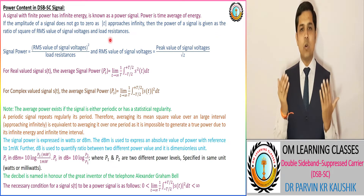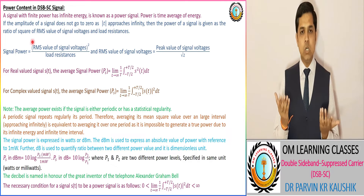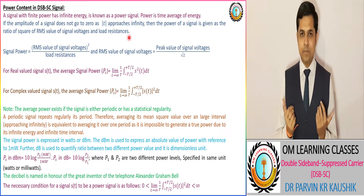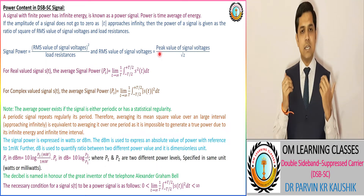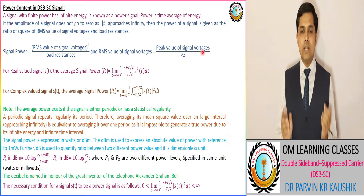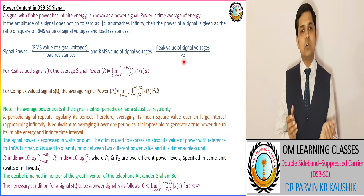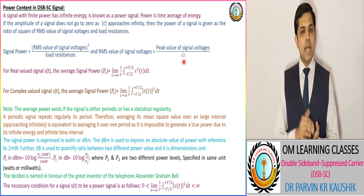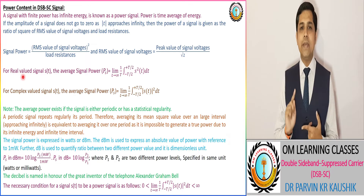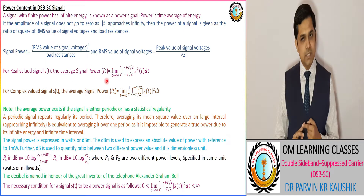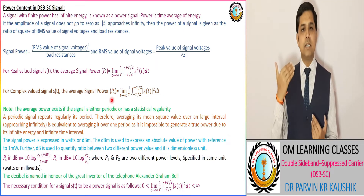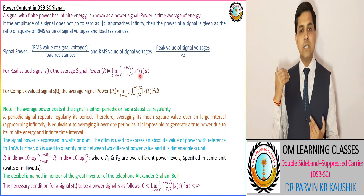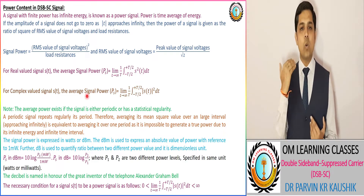If the amplitude of a signal does not go to zero as time approaches infinity, then the signal power is equal to the ratio of the square of the RMS value of signal voltage to the load resistance. The RMS value of signal voltage is the ratio of peak value to the square root of 2, which is equivalent to 1.414. For a real signal we have the average signal power formula, and for a complex-valued signal the modulus is used.